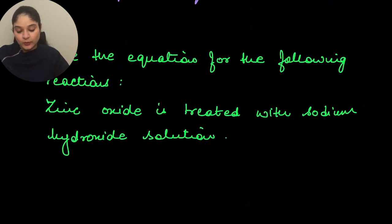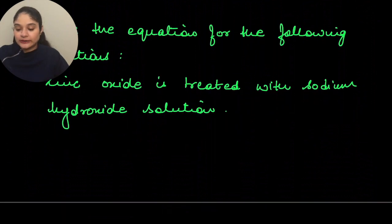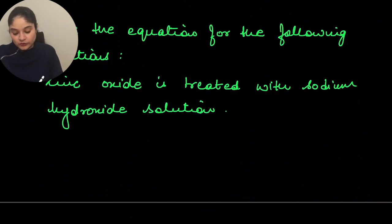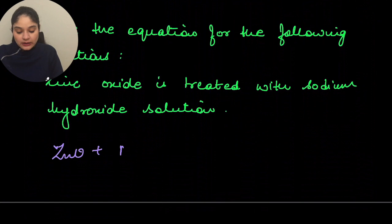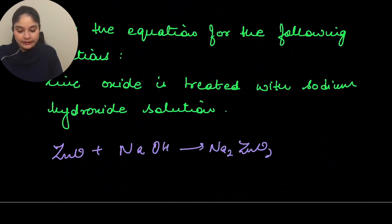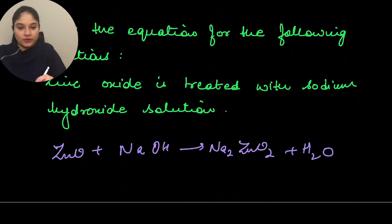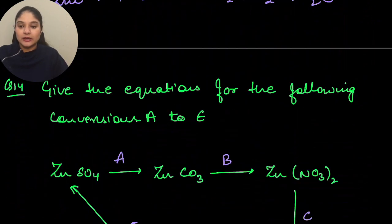Question 13: write the equation for zinc oxide treated with sodium hydroxide solution. ZnO + NaOH gives Na₂ZnO₂ + H₂O.